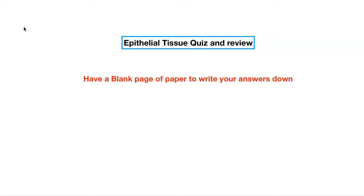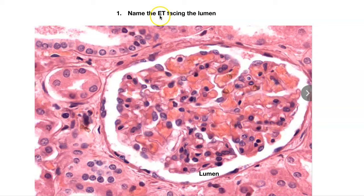Question one. Name the epithelial tissue facing the lumen — I've labeled the lumen here for you. This is the epithelial tissue surrounding the entire lumen. What type of epithelial tissue is that? Go ahead and write it down.